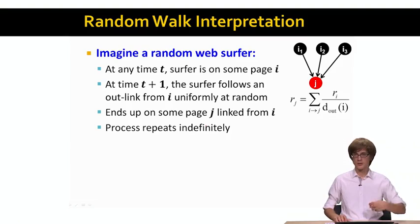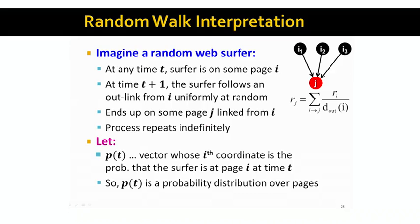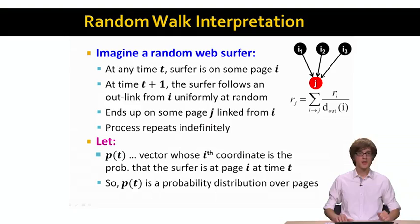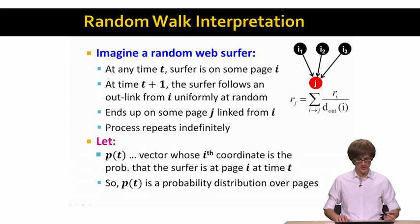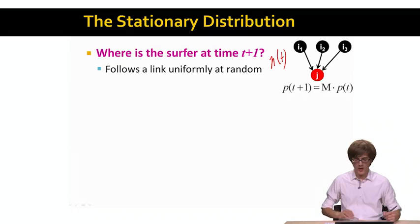Now the surfer is at node j. At time t plus 1, the surfer looks at all the outgoing links of node j and follows one at random. We can think of this vector p of t as a probability distribution over the nodes of the graph, which tells us with what probability is a walker at time t at a given node. Every node in the graph has a value corresponding to the probability that at a given time t, the random walker is at that node. The next question is: where is the random walker going to be at time t plus 1, given p of t?